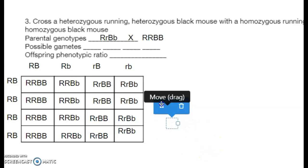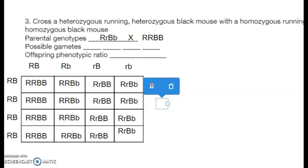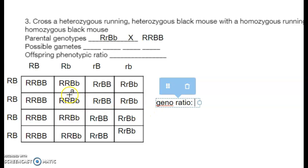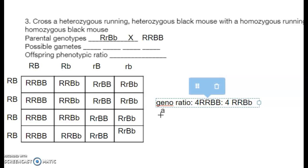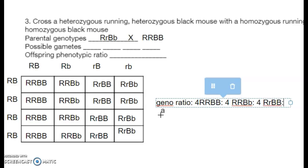Our genotypic ratio: four big R big R big B big B; four big R big R big B little b; four big R little R big B big B; four big R little R big B little b.